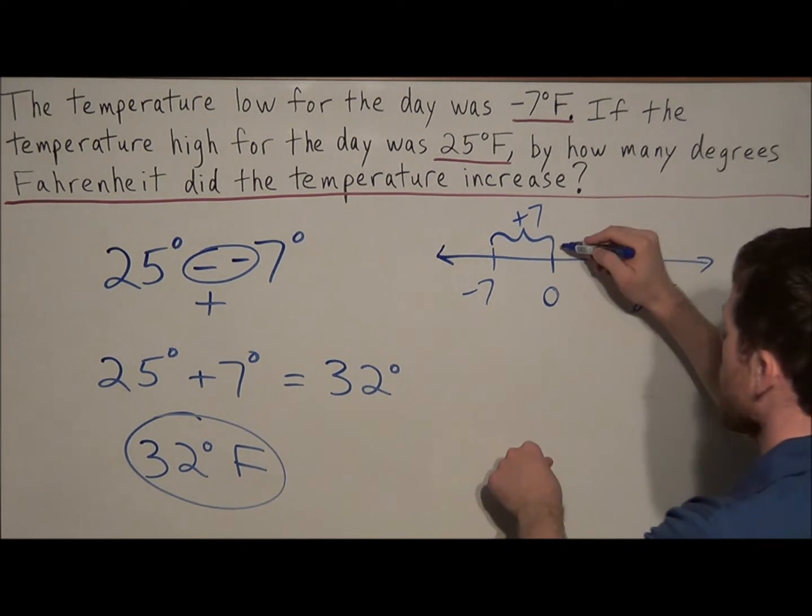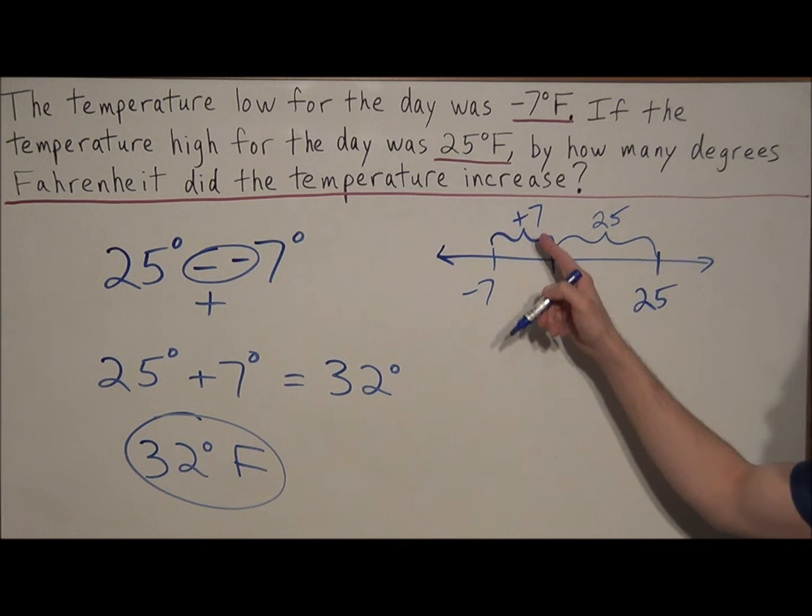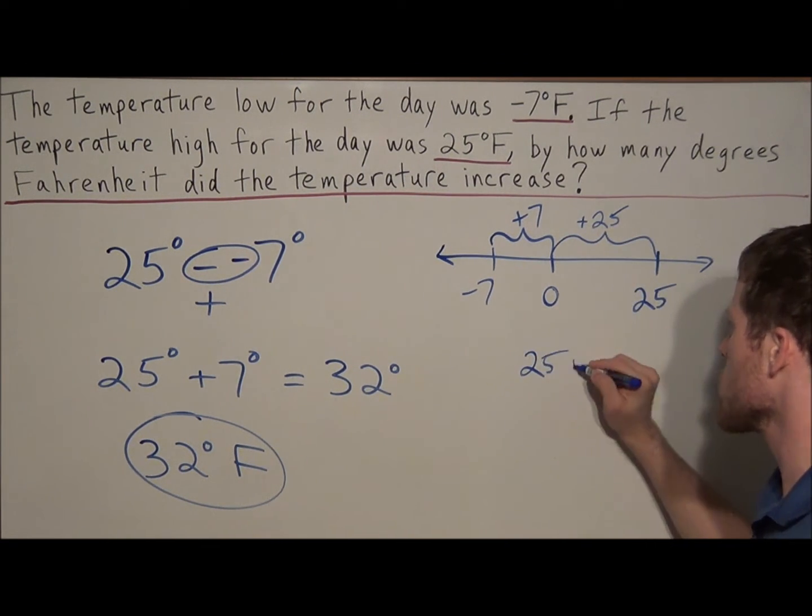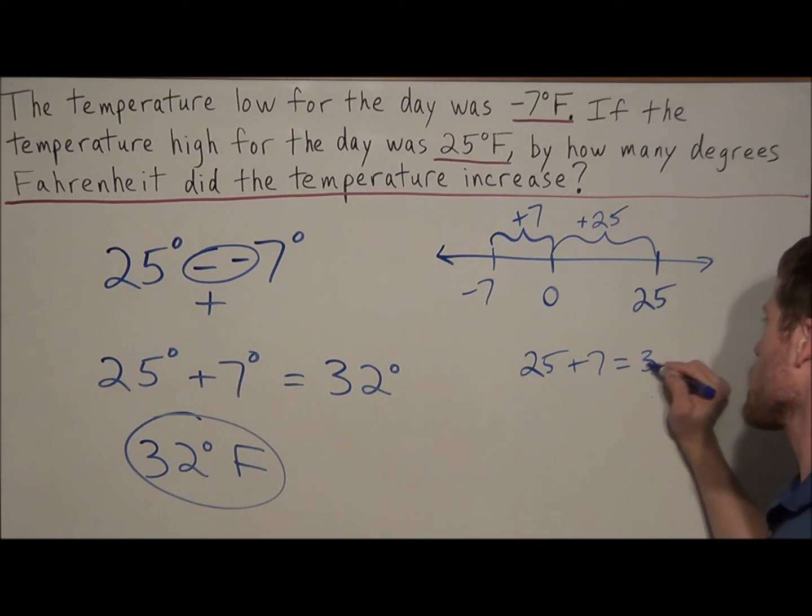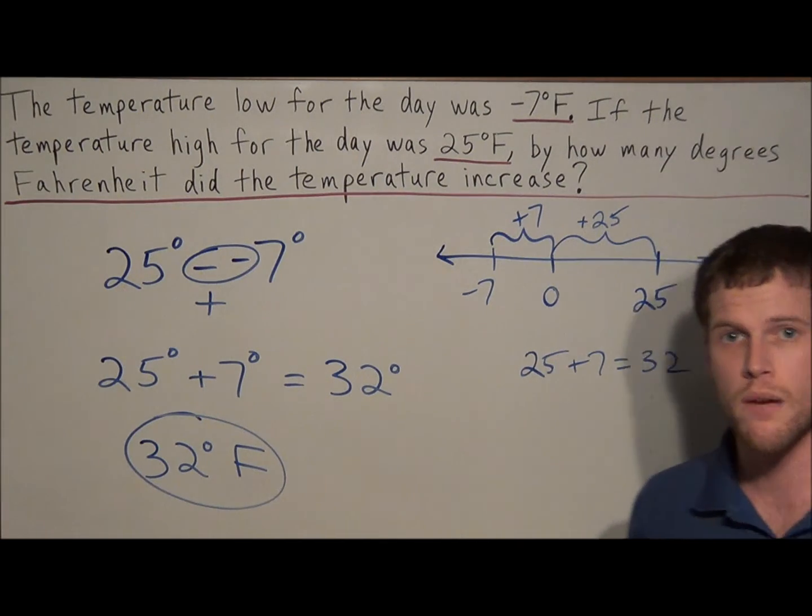And to get from zero to 25, we're increasing by 25. So we look at the total amount of increase. We increase 7 plus 25 and 25 plus 7 once again is equal to 32, which is exactly what we found by subtracting the two temperature amounts.